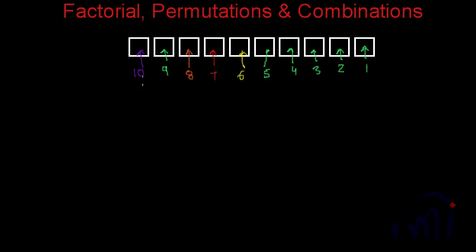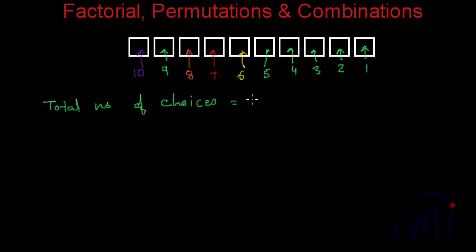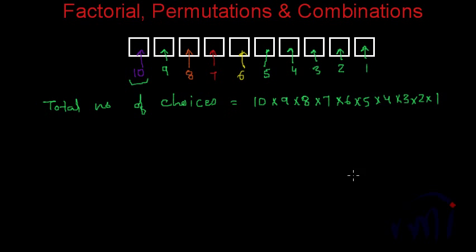The first place we want to fill will have 10 choices, the second will have 9, the third will have 8, the fourth will have 7, and then we will have 6, 5, 4, 3, 2, and 1 choices for the remaining places. Since all these places have to be filled, the total number of possibilities will be the product of all these choices — that is, 10 × 9 × 8 × 7 × 6 × 5 × 4 × 3 × 2 × 1, which equals 3,628,800. It's a very big number.